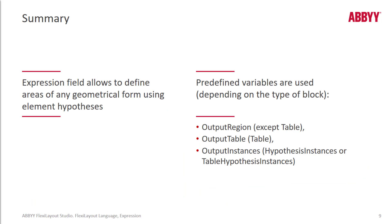Expression fields allow us to define areas of really any geometrical form using the element hypothesis. Predefined variables help us with scripting to define table regions, repeating group regions, or straight-up output regions for non-repeating group and non-table regions. You can look in the ABBYY help file for scripting examples, and also refer back to the basic coursework — there's a scripting example in the basic curriculum as well. Region inflation is especially helpful when dealing with lower quality documents.